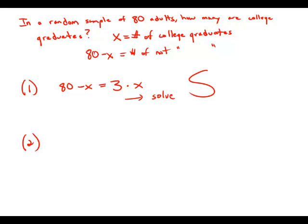Statement number two tells us the number of adults who are not college graduates is 40 more than the number of adults who are college graduates. So the number who are not college graduates is 40 more, 40 plus x. Again, we have an equation that we could solve for x. We don't have to actually do the solving. It's enough to know that we could solve. We have sufficient information. Both statements are sufficient. Answer choice D.